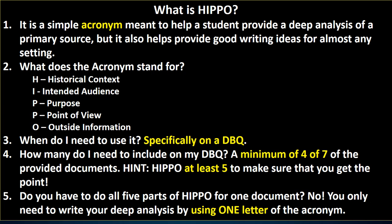I is intended audience — pretty self-explanatory. P is the purpose of the document; the author has a reason for writing this, can you flush out what that means. The next P is point of view — what is the point of view of the author who created that document; we all have bias in some sort of a way, flush that out as well. And O is outside information not specifically mentioned in the document — what can you bring to the table with that?